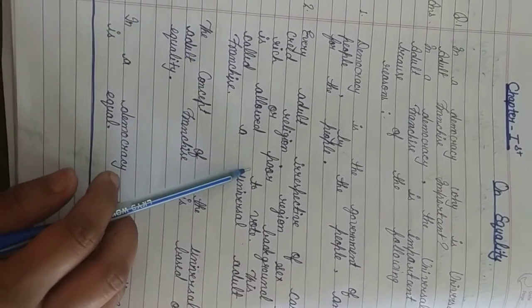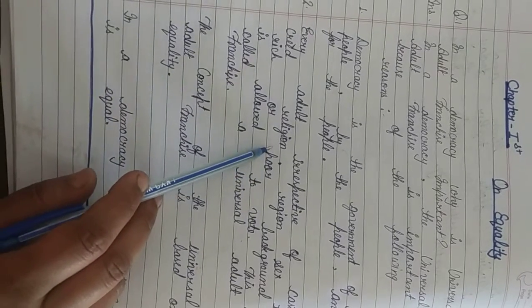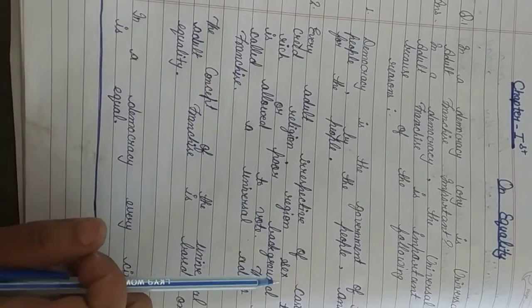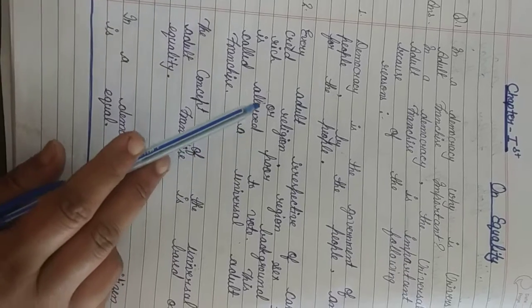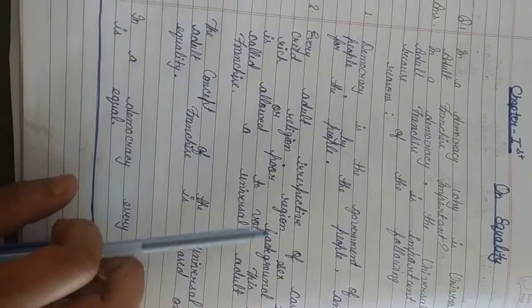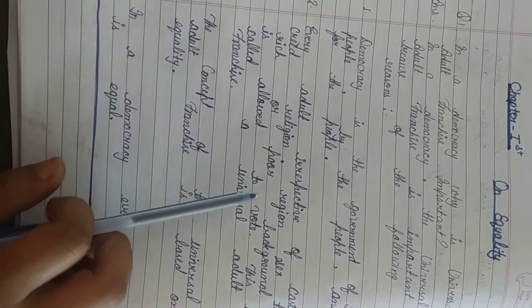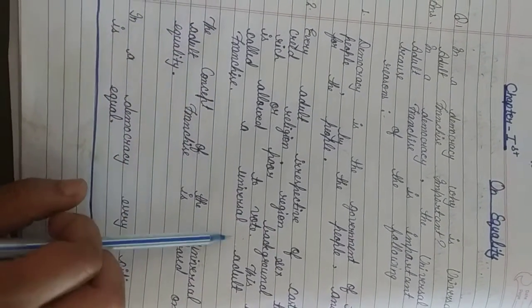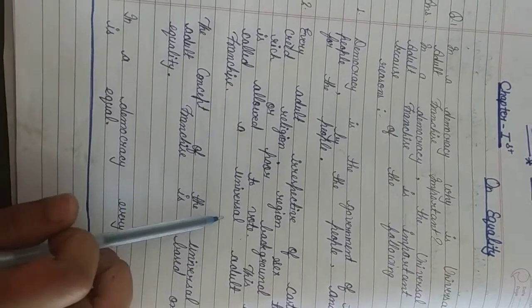Means all adults in the country, whether of any religion, any gender, any economic background, rich or poor, from any background, everyone is allowed to vote. And this is called universal adult franchise.